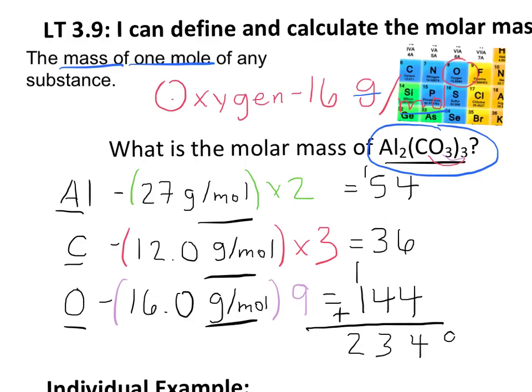So the final units for this answer are 234 grams per mole. That is the molar mass for Al2(CO3)3, which we calculated by once again adding the molar mass for each individual element.